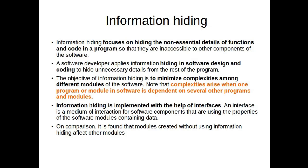Information hiding focuses on hiding the essential details of functions and code in a program. A software solution to a problem always contains data structures meant to represent information in the problem domain. Only certain operations are performed on certain information, and the information captured in the data structures should be hidden from the rest of the system.